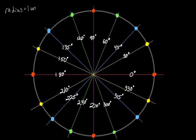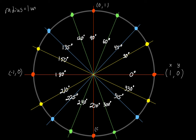Finding the quadrantal points is very simple. Coordinate points tell us how far we travel in the x-direction and in the y-direction. From the center to the 0° point, we travel 1 unit to the right and 0 units up or down. At 90°, we travel 0 units left and right, but 1 unit up. At 180°, we travel 1 unit to the left — make sure you've got that negative — and 0 units up or down. At 270°, we travel 0 units left or right and 1 unit down, so again we've got that negative sign.